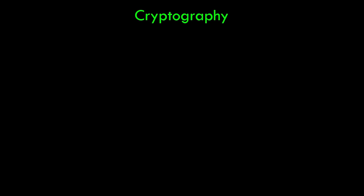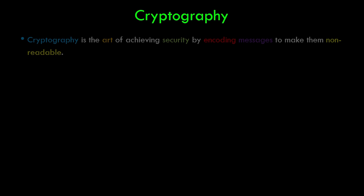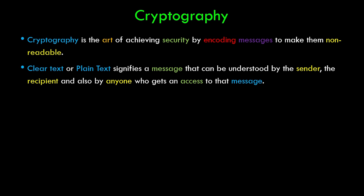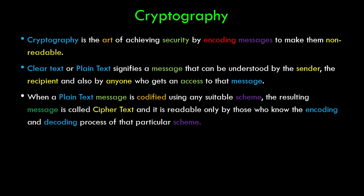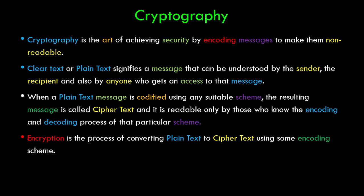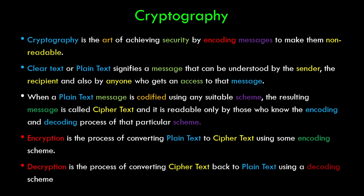Here's the theoretical definition of cryptography and some associated terms. Cryptography is the art of achieving security by encoding messages to make them non-readable — which is exactly what Alice and Bob just did. Clear text or plain text is a message that can be understood by the sender, recipient, and anyone who gets access to it. When plain text is codified using a suitable scheme, the resulting message is called ciphertext, readable only to those who know the encoding and decoding process. Encryption is converting plain text to ciphertext; decryption is converting ciphertext back to plain text.